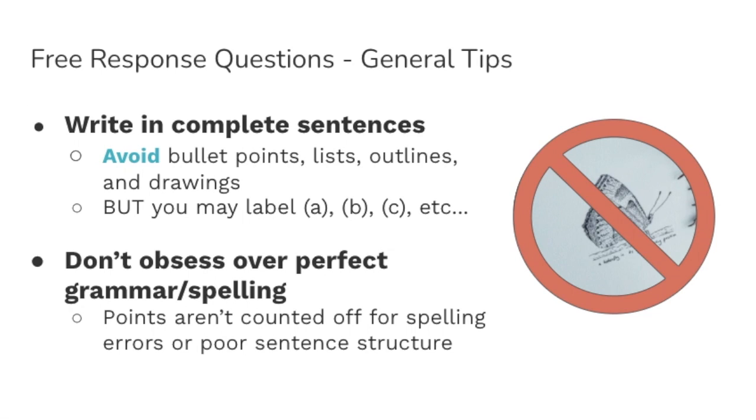Some more general tips, which are important to the long FRQs, are that you do need to write in complete sentences. So avoid bullet point lists, outlines, and drawings. You can label the sections that the question's asking about. So for example, it may say for part A, do this. You can label part A, write your sentence out, and then part B, write your sentence out. But this shouldn't be a bullet point. You still need to write in complete sentences.